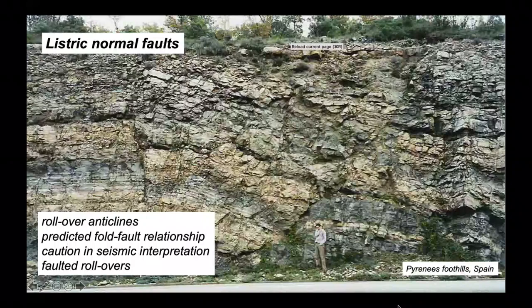We'll introduce a technique for constructing cross sections through these types of structures which predicts the relationship between the fault in the hanging wall and the geometry of the fault. We'll strike a note of caution when it comes to interpreting listric faults on seismic reflection data, and we'll have a brief look at a complexity that arises when anticlines in the hanging wall become faulted.